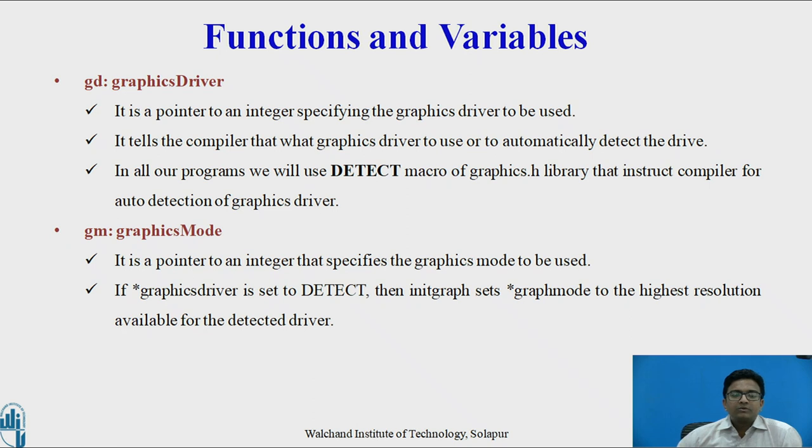So before going for various objects, we will see what we mean by graphics driver and graphics mode, which are required to run the graphics program. Graphics driver is a pointer to an integer specifying the graphics driver to be used. It tells the compiler what graphics driver to use or to automatically detect the drive. In all our programs, we use DETECT macro of graphics.h library that instructs compiler for autodetection of graphics driver.